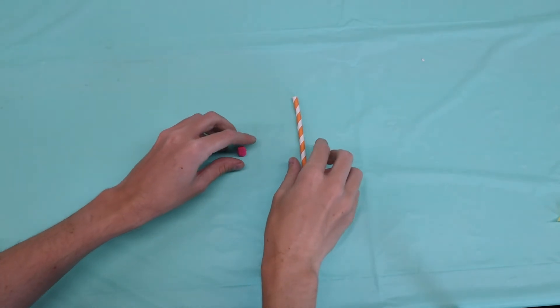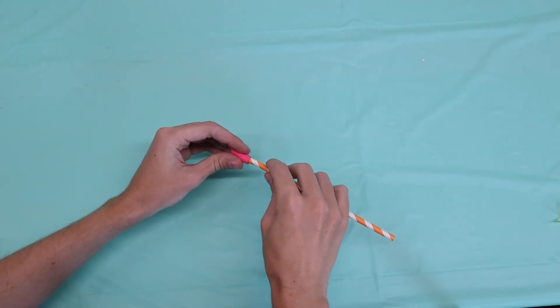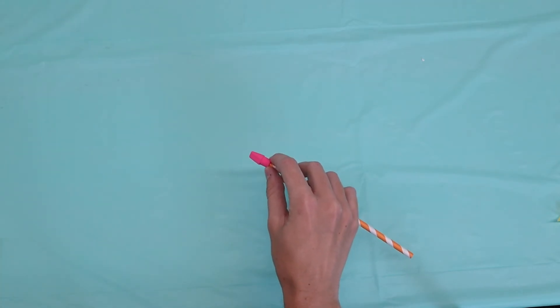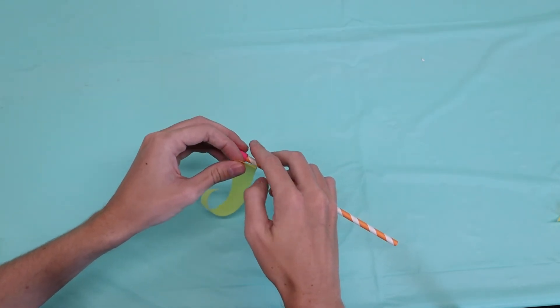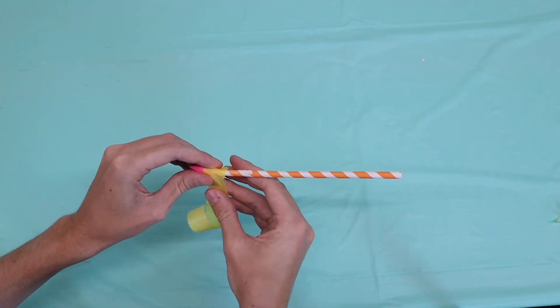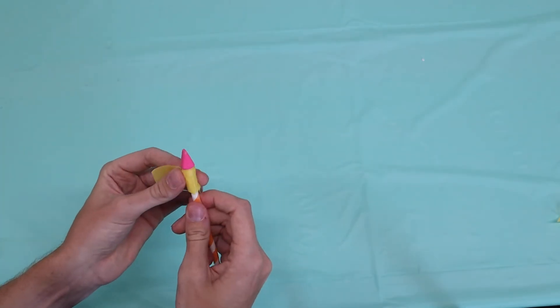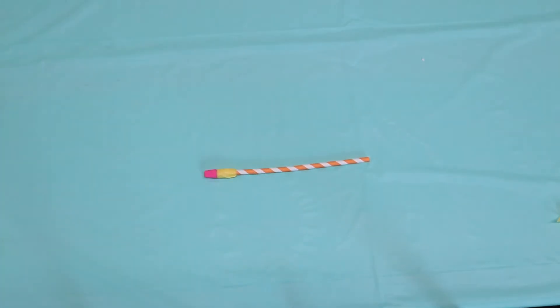Step one is to place our eraser on one end of the straw and secure it with a couple layers of tape. This is going to be the cone of our rocket. It will help keep the straw from breaking or from damaging any items that it might hit. The only thing this eraser is going to be erasing is your enemies.